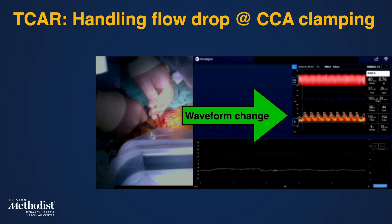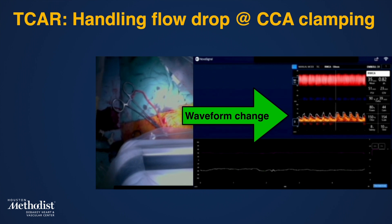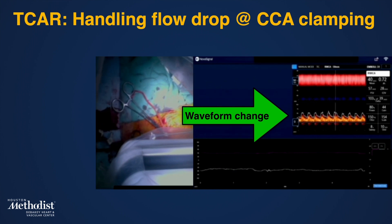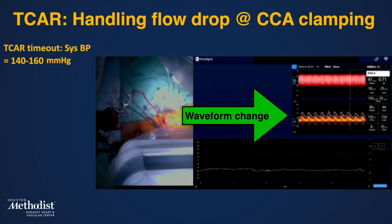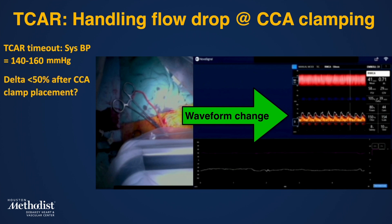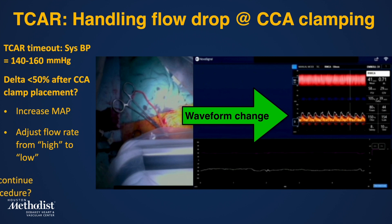During TCAR, the initiation of flow reversal and the cross-clamping of the common carotid artery are critical points requiring special attention to changes in mean flow velocity. As during endarterectomy, the rate of decrease depends on established collaterals. The TCAR timeout ensures that systolic blood pressure remains between 140 and 160 mmHg after flow reversal initiation. Notwithstanding this blood pressure range, a greater than 50% decrease in delta may still occur, warranting further MAP increase within a reasonable range. We can also consider changing the rate of flow reversal from high to low. If delta remains low, continuation of flow reversal can be considered using the operator's judgment.